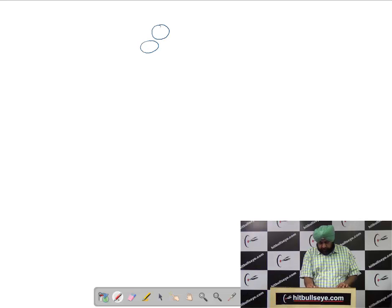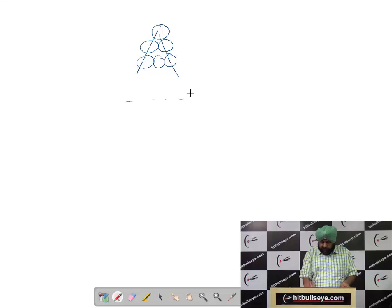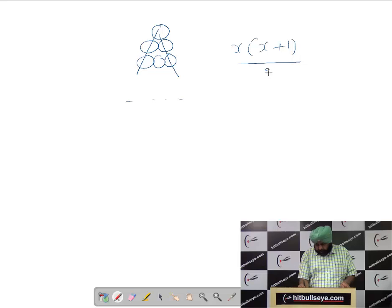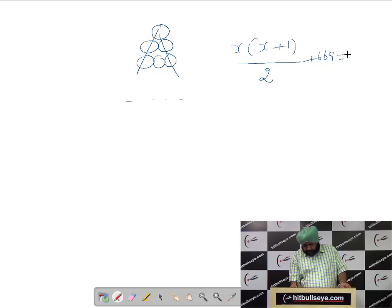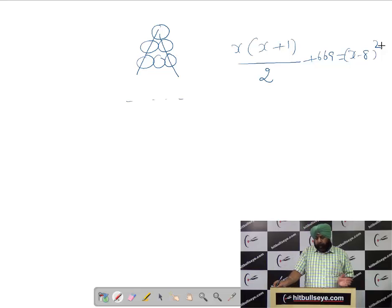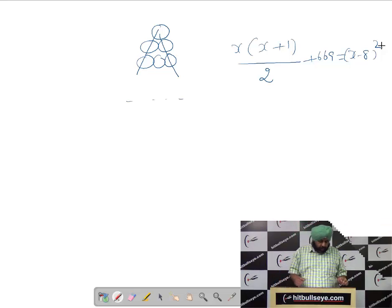Normally, students will do like this: they arrange them in rows. First row one marble, second row two, third row three. This is the way we can make an equilateral triangle. So let the number of rows be X. Ram will be using X into (X+1)/2 marbles. Shyam, on adding 669 marbles, arranges into the shape of a square. Total marbles with Shyam would have been (X-8) whole square, the reason being the number of marbles in each side of the square are 8 less than each side of the equilateral triangle.